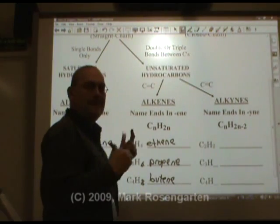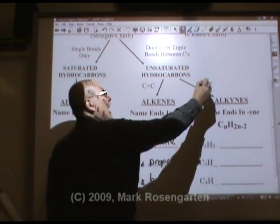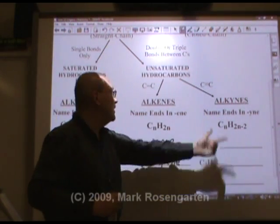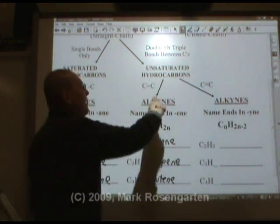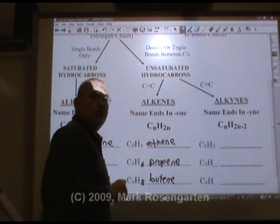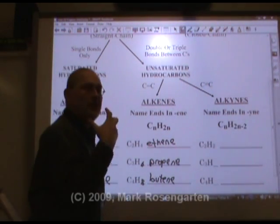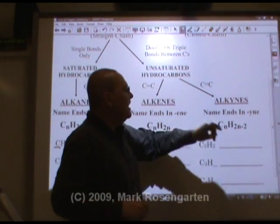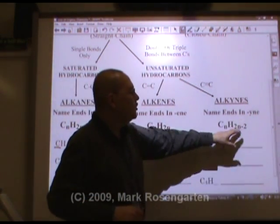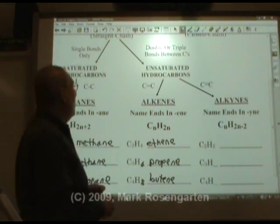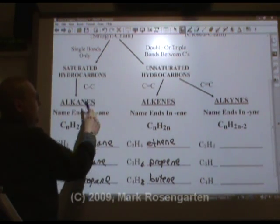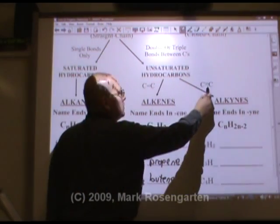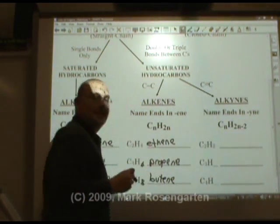Alkynes — the name ends in -Y-N-E. Adding that extra bond means alkynes have two fewer hydrogens than alkenes. Every time you put a bond in between two carbons, two fewer hydrogens can bond. The general formula is CnH2n minus two. So: 2n plus two for alkanes, add a double bond — two fewer hydrogens — add a triple bond — two fewer hydrogens than that.